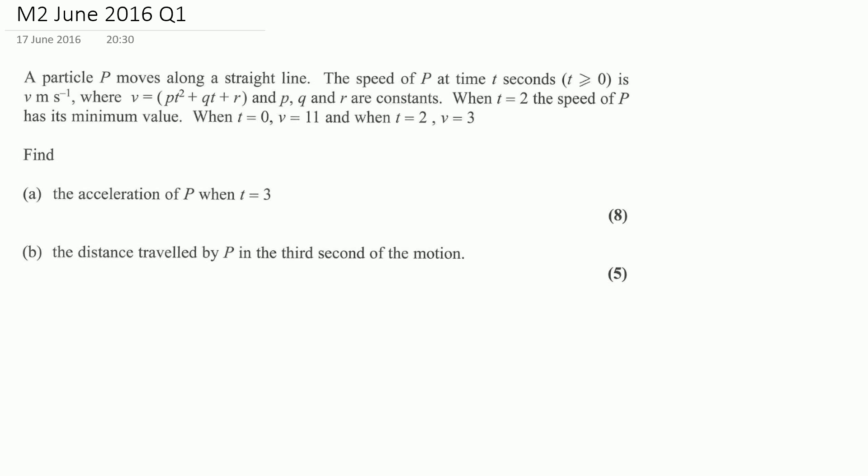So here we go with question 1. We have a particle moving along a straight line and the speed of p at time t, when t is greater than 0, is given by a certain equation with unknowns. We're given a set of conditions: when t equals 2 the speed of p has its minimum value, when t equals 0 v is 11, and when t equals 2 v is 3. We need to use that information to find the values of p, q, and r.